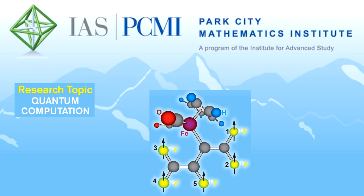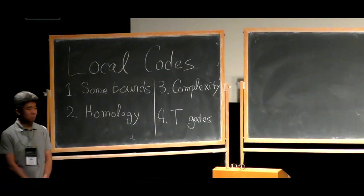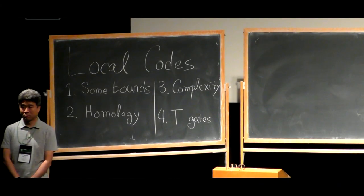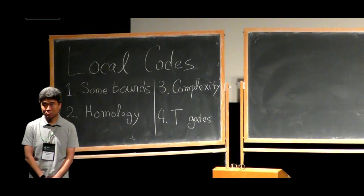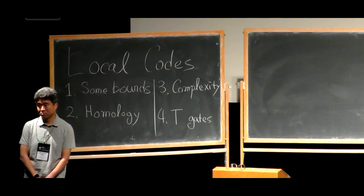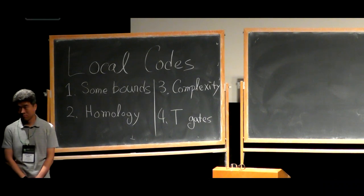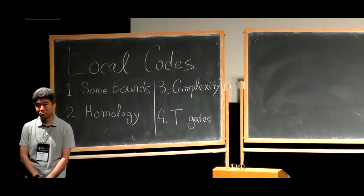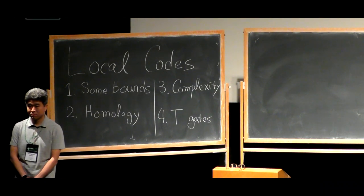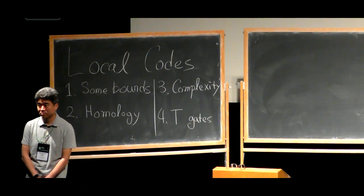I'd like to remind you that at 3:15 we have a panel on career paths here, so I think it will be a good discussion, so please stay tuned. And now we have the lecture by Jong-un Ha. He did his PhD at Caltech, then he was a postdoc at MIT, and now he's a senior researcher at Microsoft. He'll tell us about topological codes.